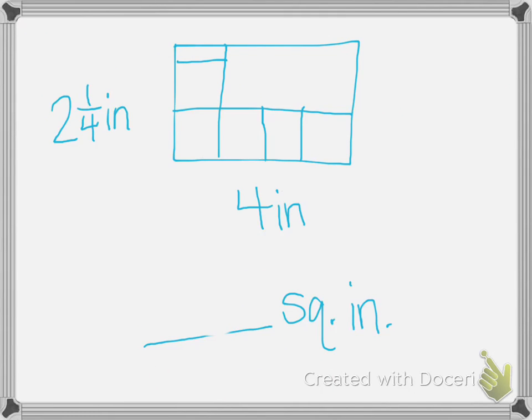Number 2 says what is the area of a rectangle that is 2 and 1 fourth inch wide and 4 inches long? So I have to figure out the area. Since I have 1, 2, and 1 fourth right here,